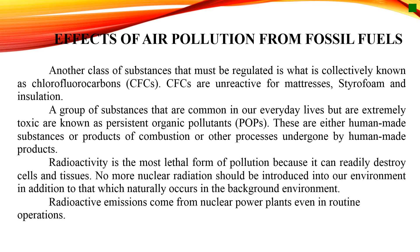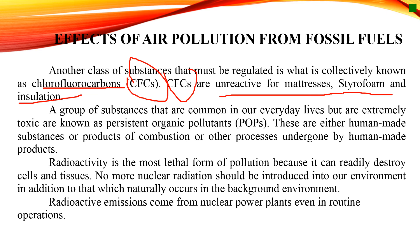Another class of regulated substances is collectively known as chlorofluorocarbons or CFCs. CFCs are used in foam matrices, styrofoam, and insulation. A group of substances common in everyday life but extremely toxic are known as persistent organic pollutants or POPs. These are either human-made substances or products of combustion or other processes involving human-made products. Radioactivity is the most lethal form of pollution because it can readily destroy cells and tissues. No nuclear radiation beyond natural background levels should be introduced into our environment. Radioactive emissions also come from nuclear power plants even in routine operations.